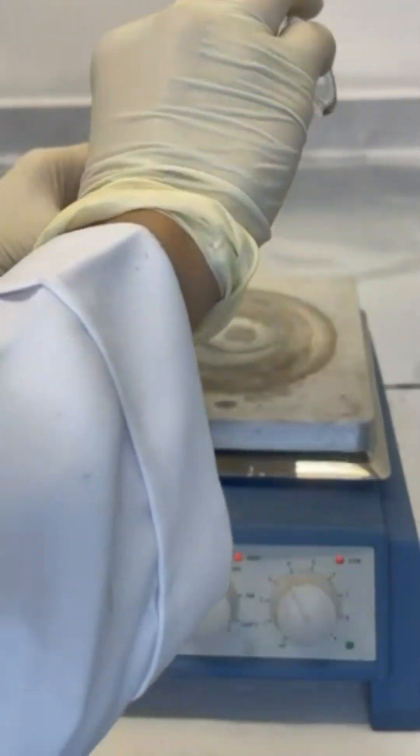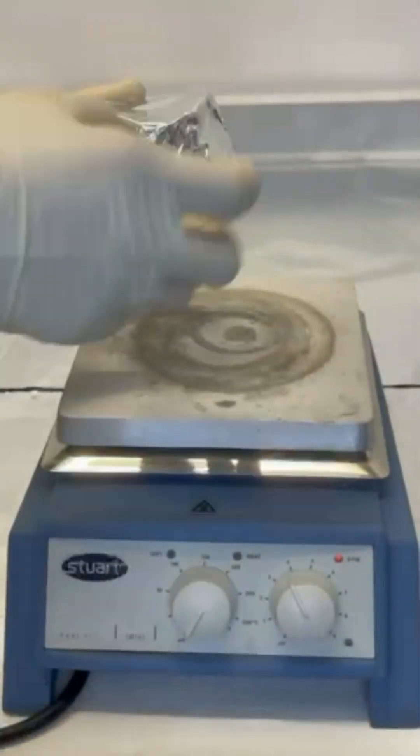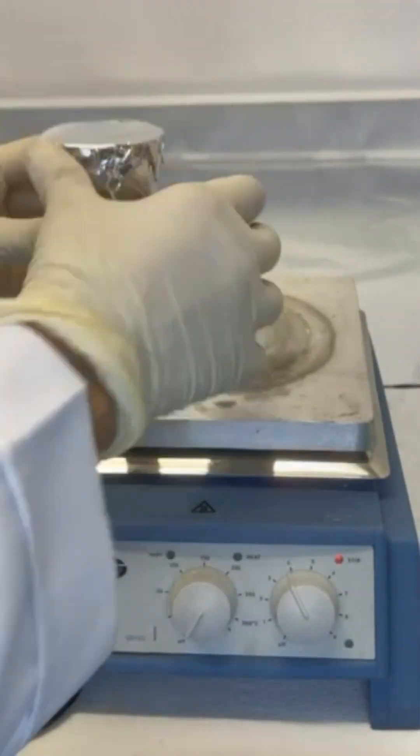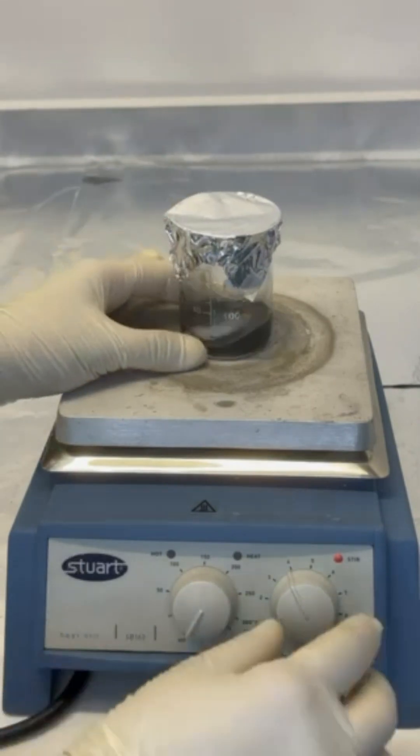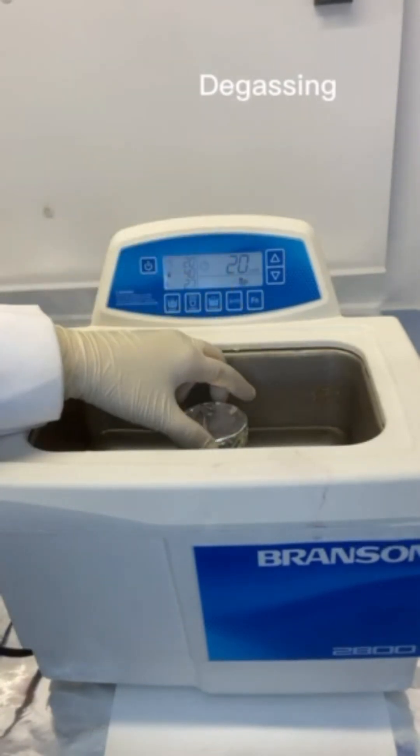Mix polymer with the filler and stir for an hour. Put the mixture into the degassing for 20 minutes to remove the gases.